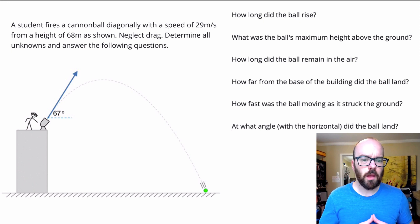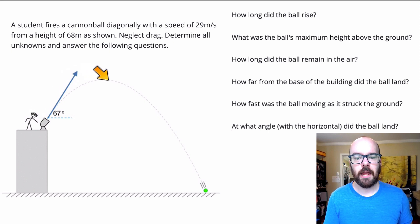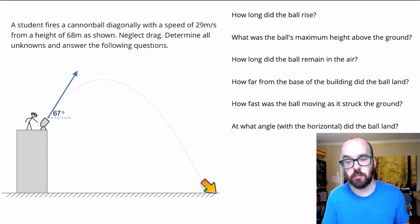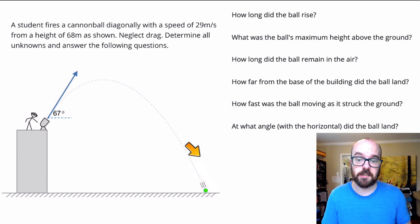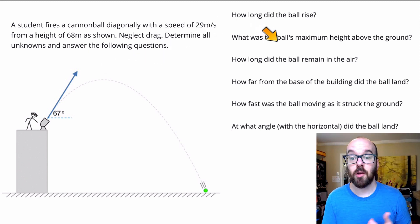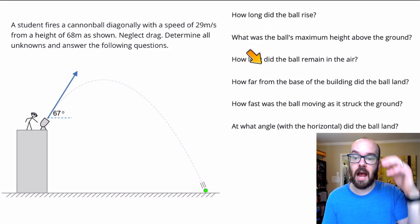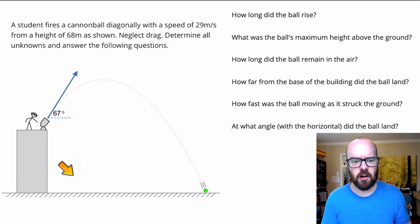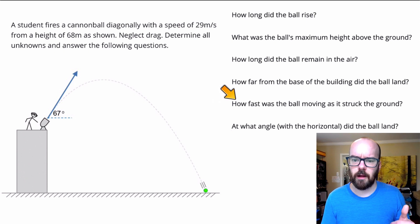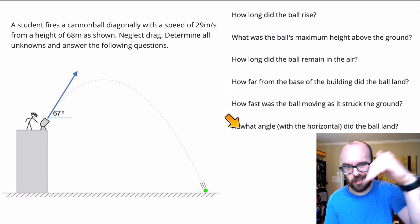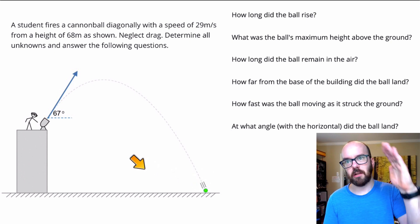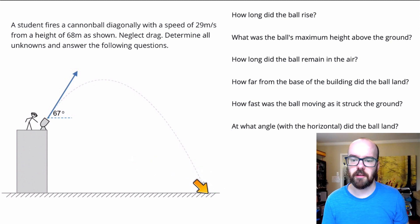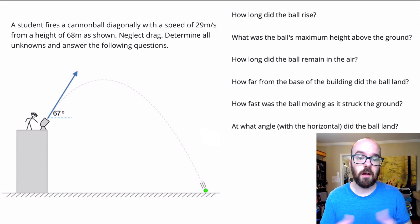So let's take a look at this problem. We've got some information about a student who's launching a projectile from the top of a building, and it's going to land somewhere here to the right. There are lots of questions we can ask: how long did it take the ball to rise before it came back down, what was the ball's maximum height, how long did it remain in the air, how far from the base of the building did the ball land, how fast was the ball moving when it struck the ground, and what angle was it moving at when it finally hit the ground?